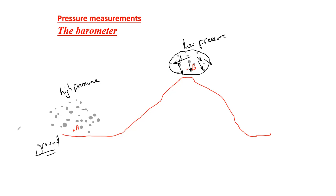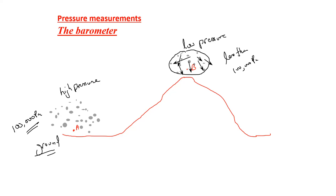At ground level or sea level, the pressure is 100,000 Pascal. On the mountain, the pressure will be less than 100,000 Pascal. Even on the Earth's surface, some regions are higher than others so pressure varies, but normal atmospheric pressure is considered to be 100,000 Pascal.